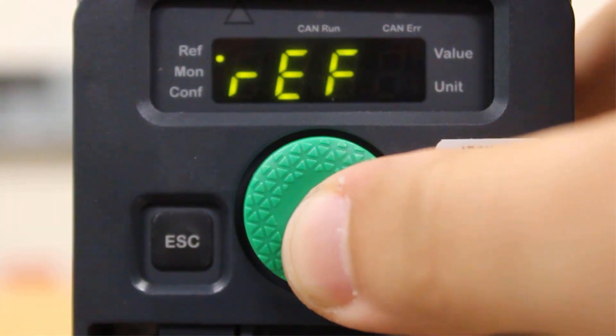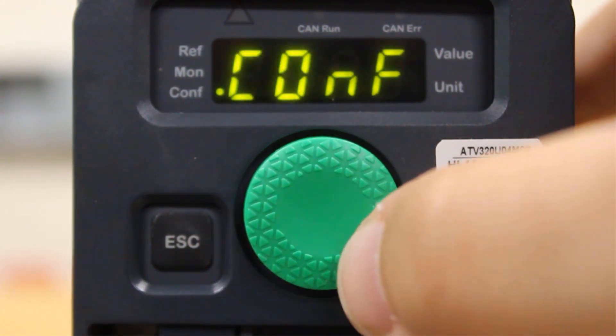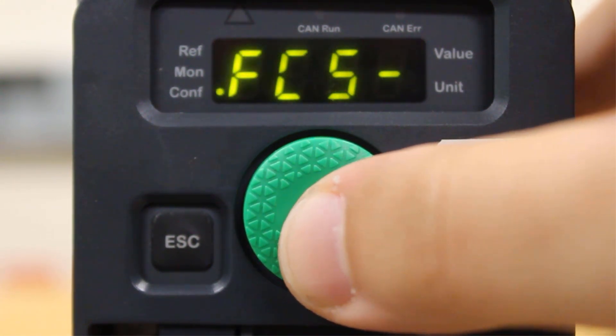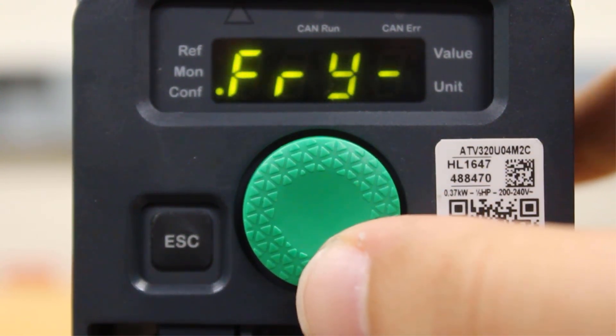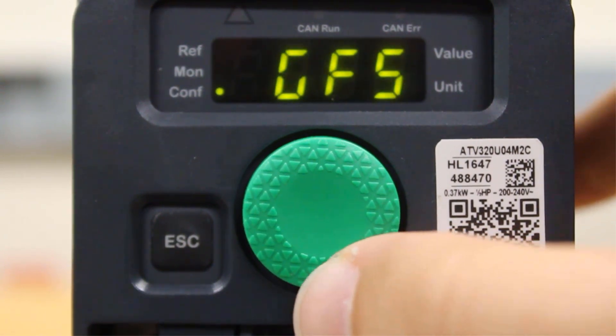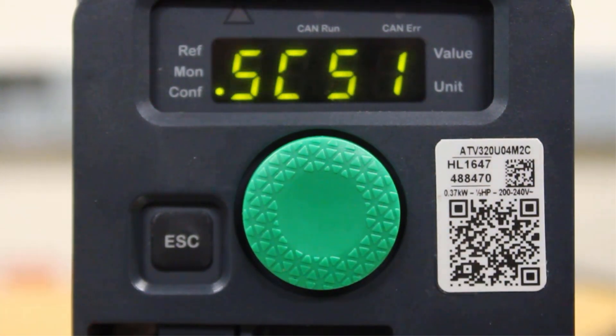Enter on FCS-, and the first thing you want to do to save your settings is go to SCS1, the save configuration parameter.